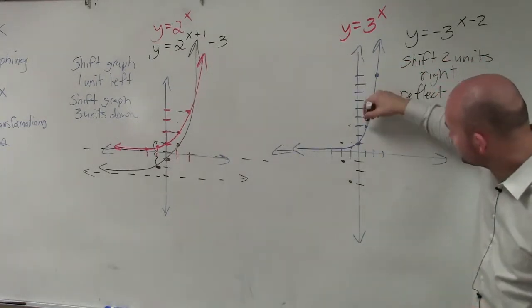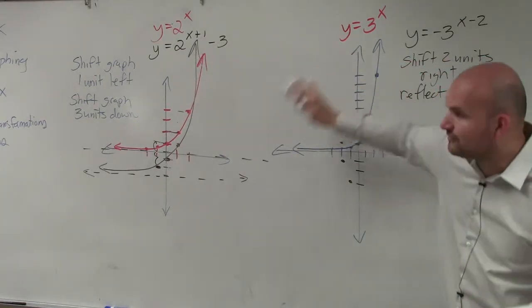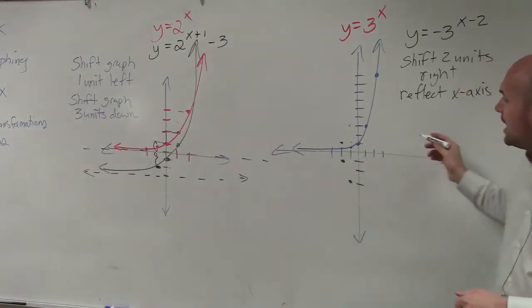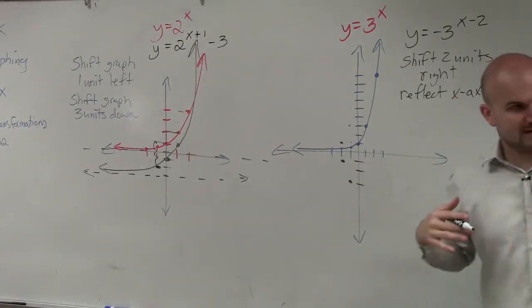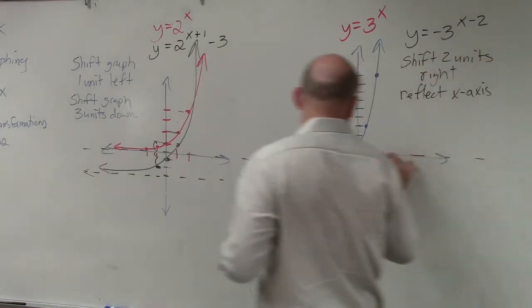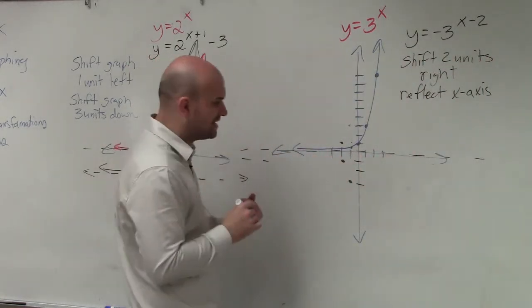So all I'm doing is taking these points, shifting them left 1, and reflecting them over the x-axis. Now, since I'm not shifting up or down, the horizontal asymptote is not going to change.